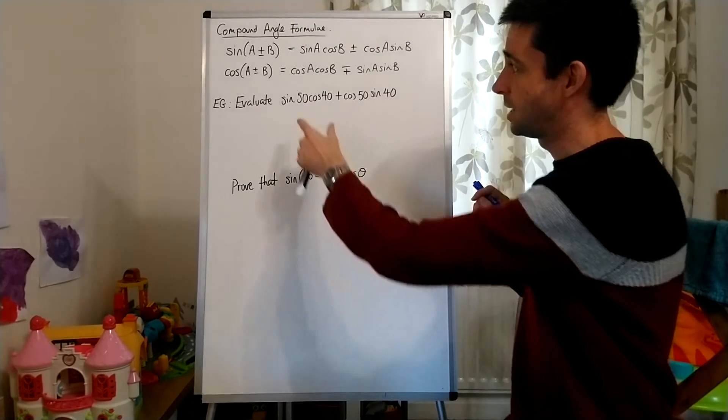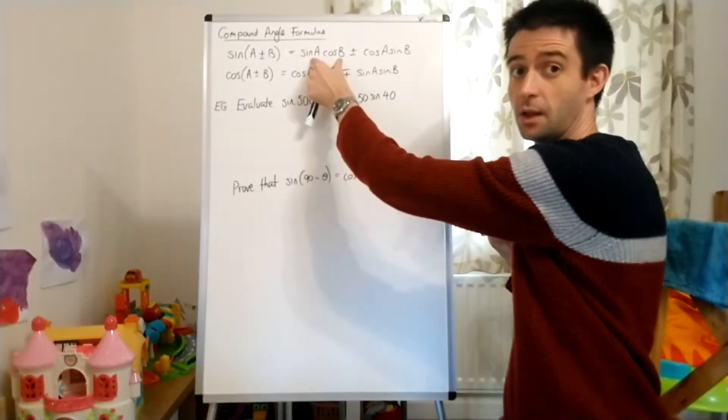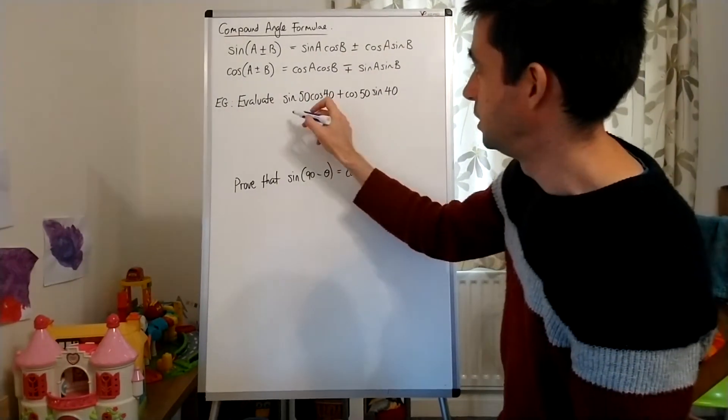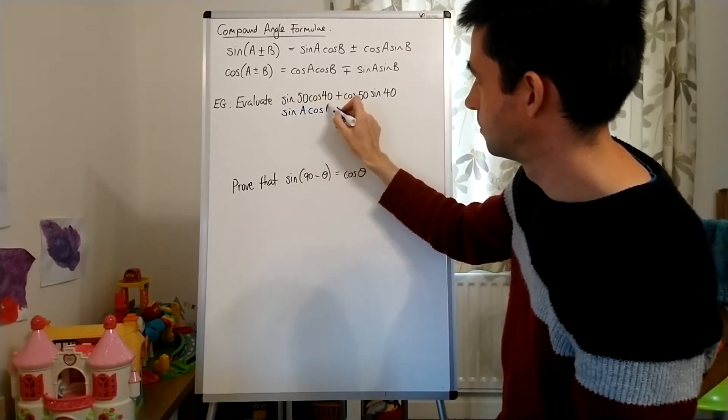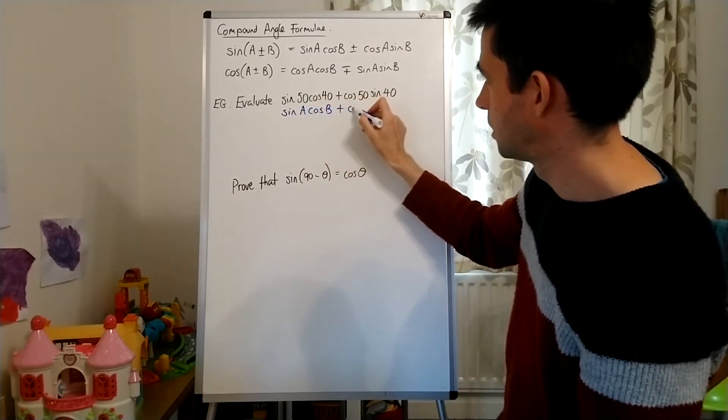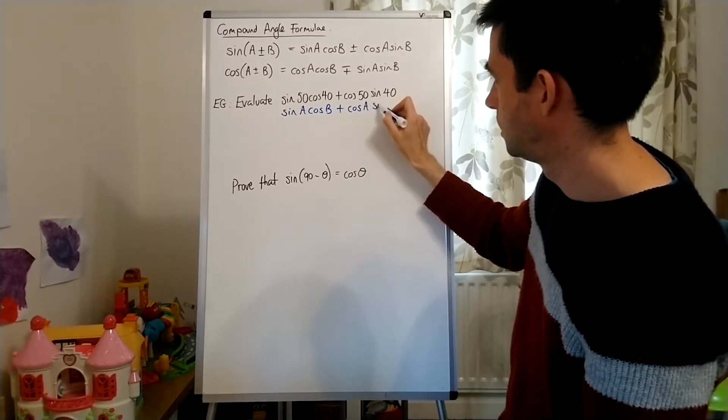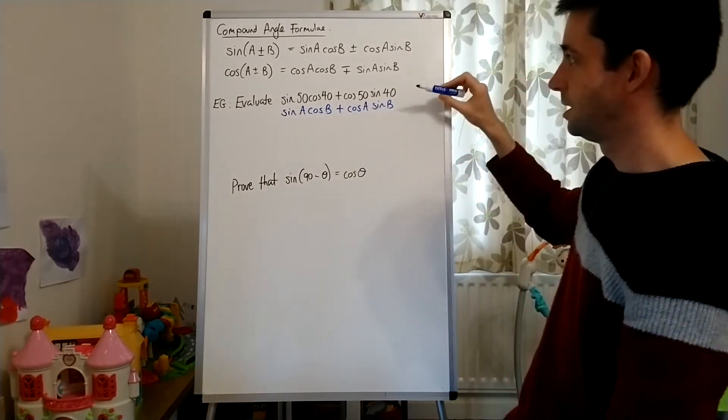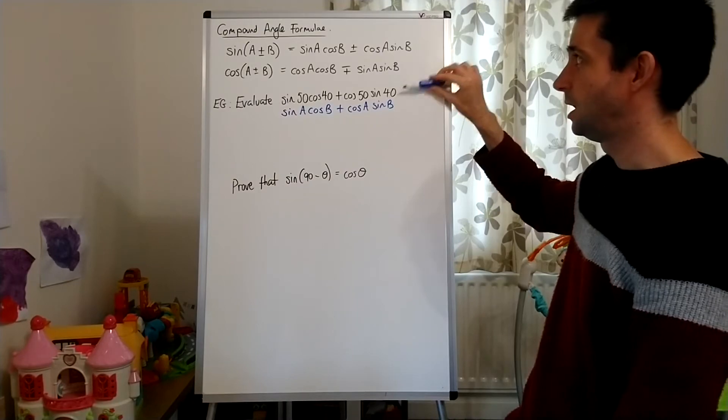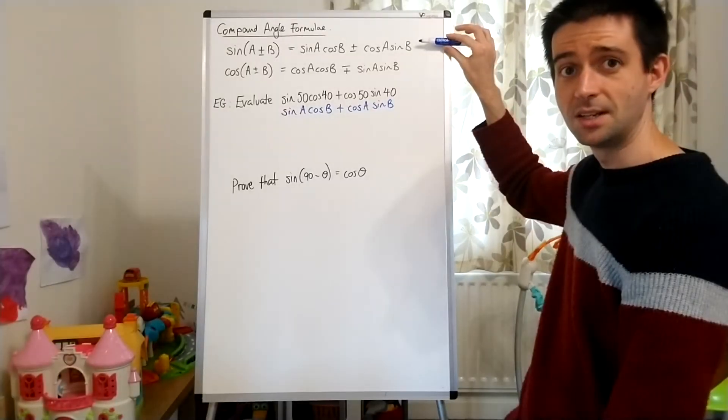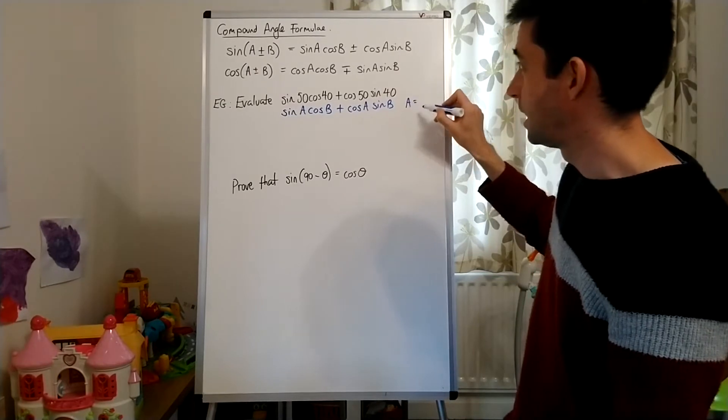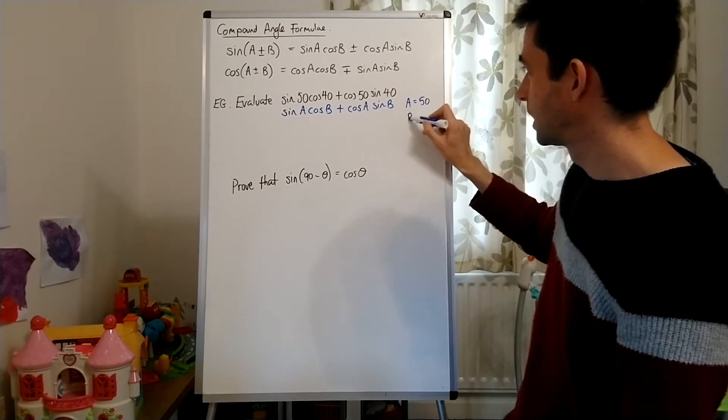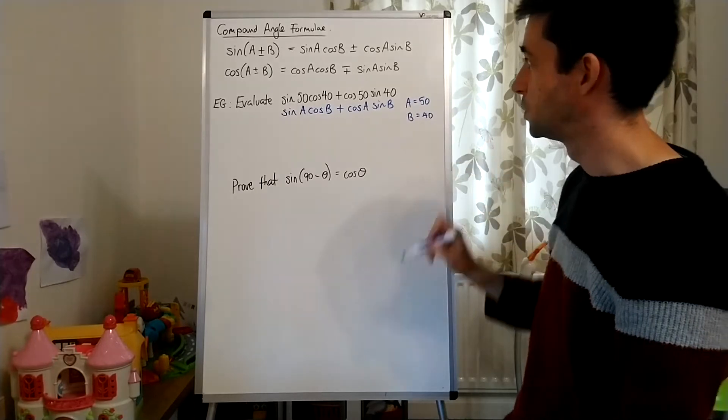You can probably see, by looking at that, you've got sine cos, so it's looking like this one. And you'd be absolutely right. So I'm going to write sine A cos B plus cos A sine B, because this expression here looks just like this identity here. And what I've worked out by doing that is that the value of A is 50, and the value of B is 40.